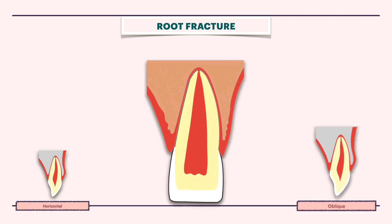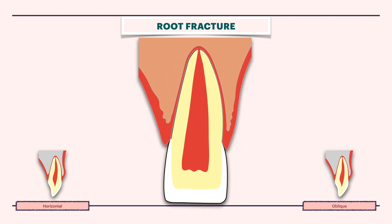Also, the fracture line may be present in the apical third, middle third or coronal third of the root. The location being an important factor in the prognosis of root fracture.